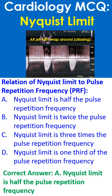Nyquist limit is the maximum velocity of blood flow that can be estimated by pulse Doppler. It can be increased by increasing the pulse repetition frequency of the machine until the physical limit is reached. If the velocity is higher, the spectrum display will appear to wrap around or alias.